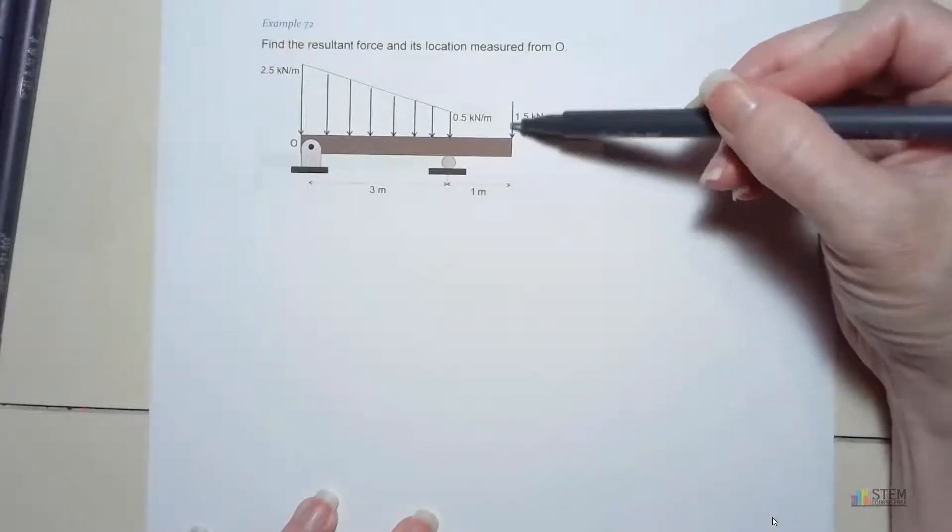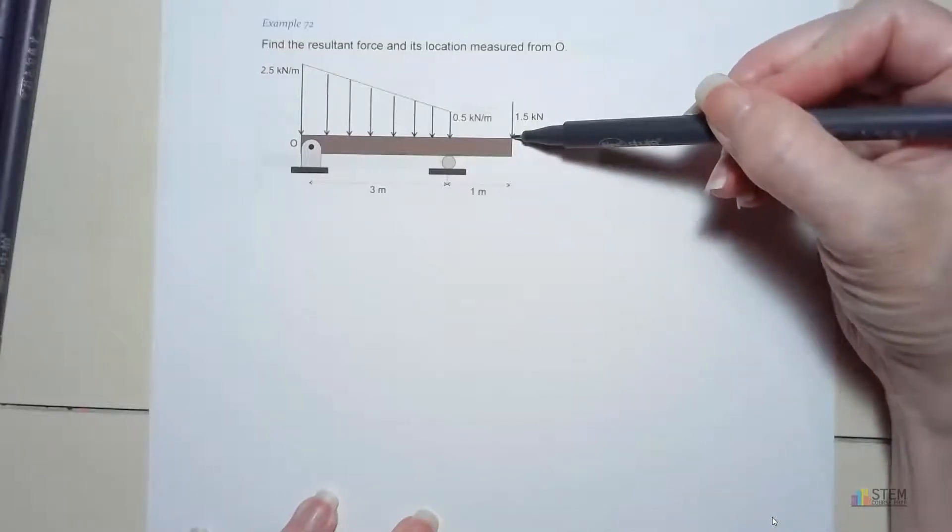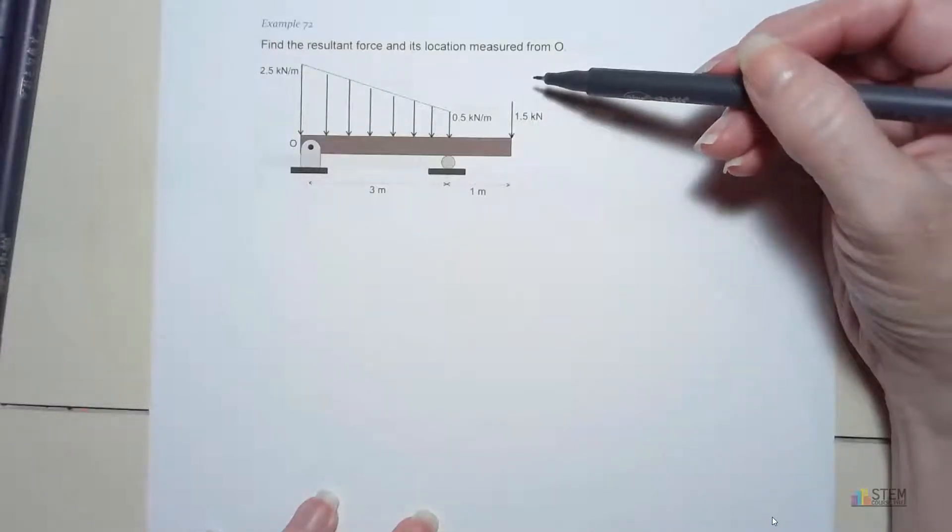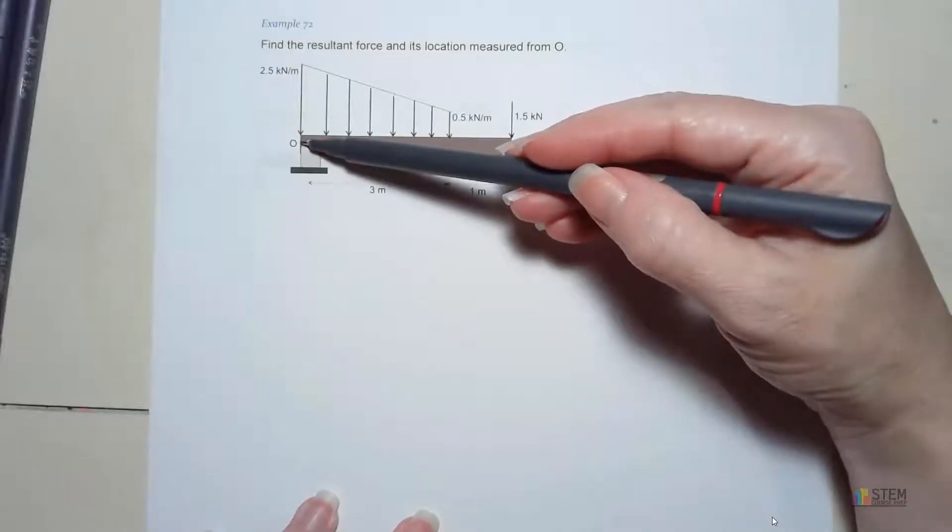We've got a pin at O also. Now we also have an applied load at the end, which is 1.5 kilonewtons. What we want to do is we want to find the resultant force and its location measured from this point O over here.